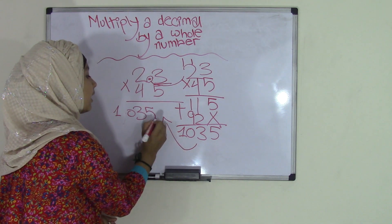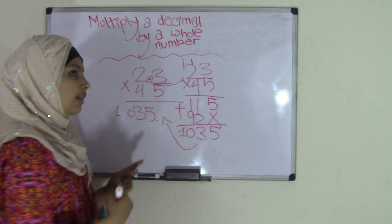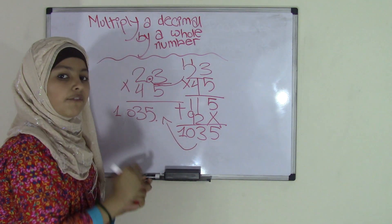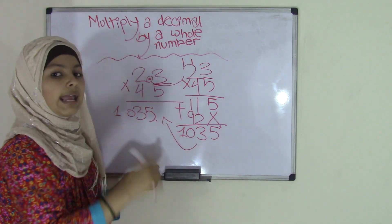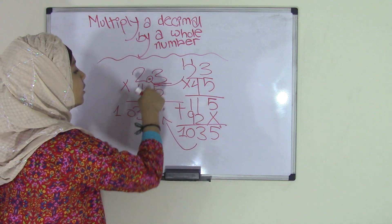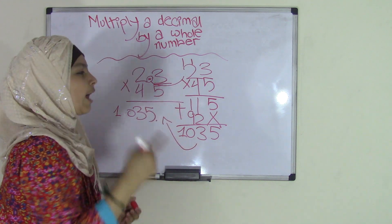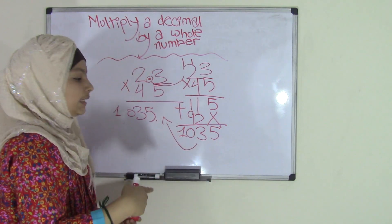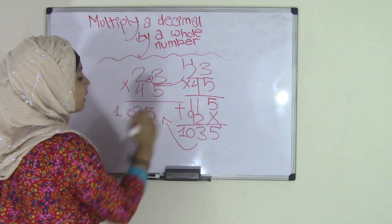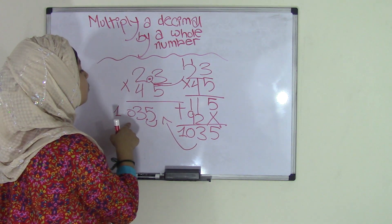...we take that decimal point and we move it one place from right to left. Why right to left? Remember, right to left decreases the value and left to right increases the value. Here, since we are doing multiplication and we had made the 2.3 into 23 and we had increased it, now we're decreasing it. So, you move it from right to left, one decimal place, and so it will become 103.5.